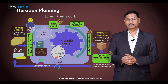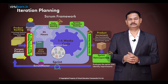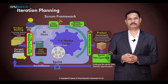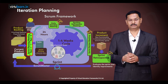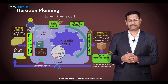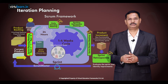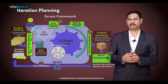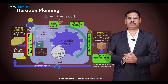Once release planning is done, let's look at the very first iteration of the release and do the iteration planning for that. It's also known as sprint planning from a Scrum point of view. The Scrum framework uses the term sprint to represent the time box which Lean and Kanban call an iteration. Iteration and sprint are synonymous. Let's look at iteration planning in detail.